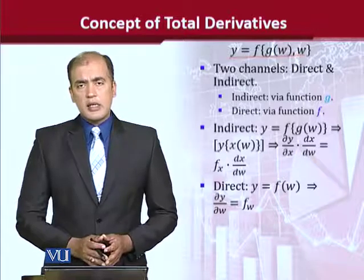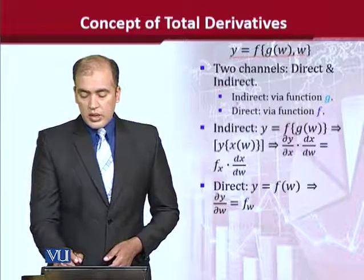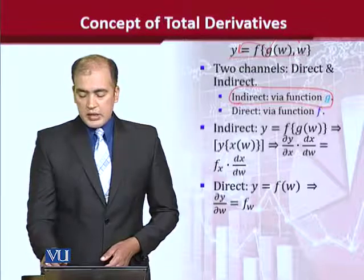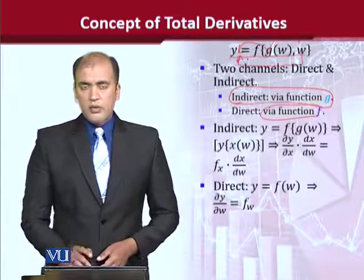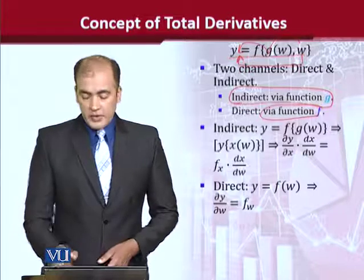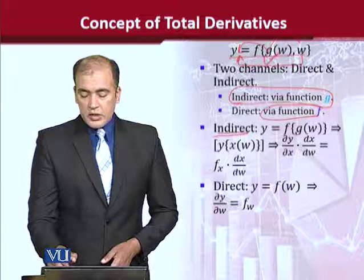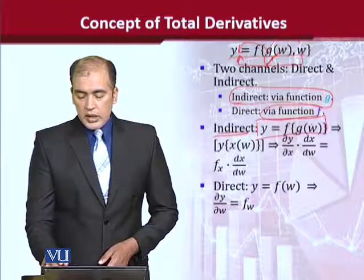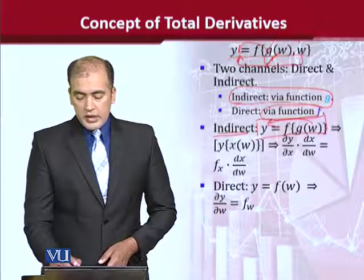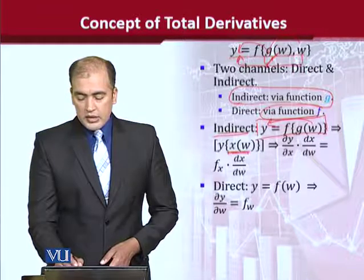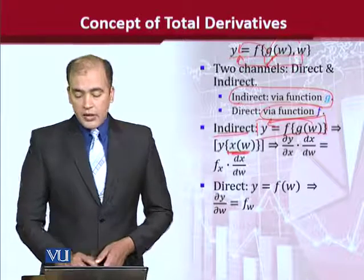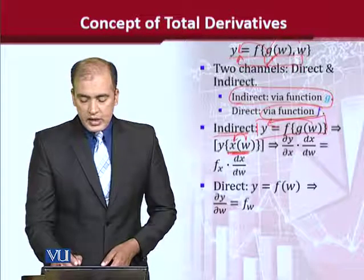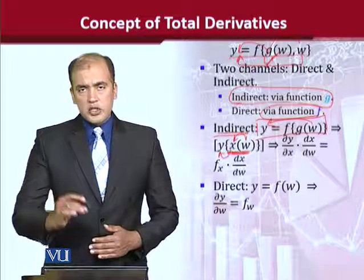We have two kinds of effects. F captures the direct impact of W on Y, while the indirect impact works through X. We can write x as a function of w, which shows that W affects X, and X affects Y. So that indirect chain is now explained.